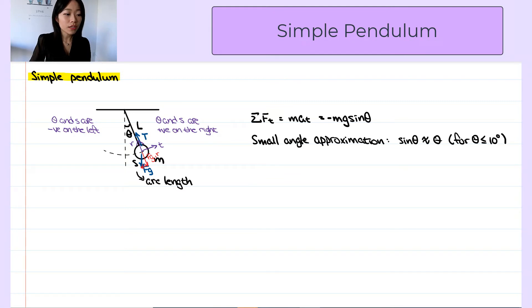So let's use this approximation in Newton's second law. We get mass times tangential acceleration equals negative mass times g times theta. The mass can cancel each other out, so we are left with tangential acceleration equals negative g times theta.